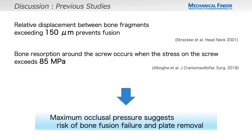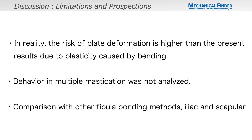However, previous studies have shown that displacement of more than 150 micrometers can interfere with bone fusion. In other words, concentrated maximum occlusal pressure may indicate a risk of bone fusion failure and plate removal. Limitations of this analysis include that the possibility of strength degradation due to plasticity caused by plate bending was not taken into account, and the behavior under multiple mastication cycles was not analyzed. We also believe that comparison with other fibula joint methods, including the ilium and scapula, is in need of further study.